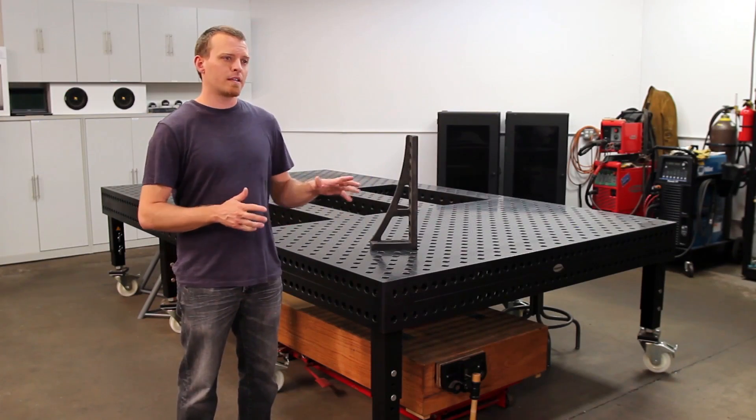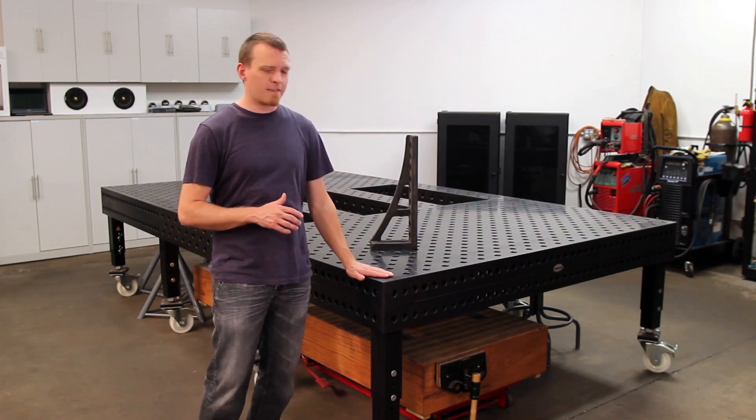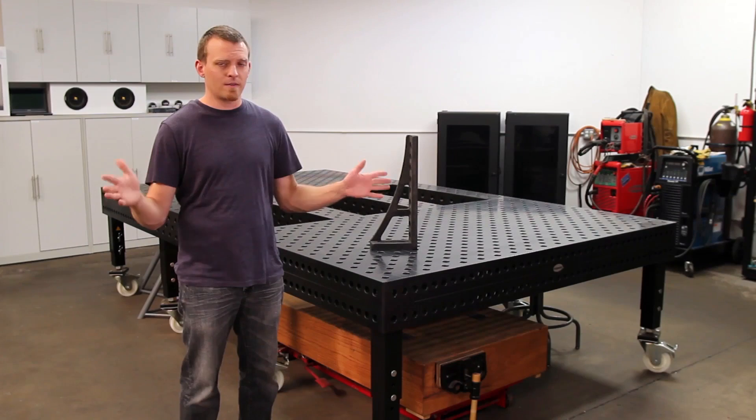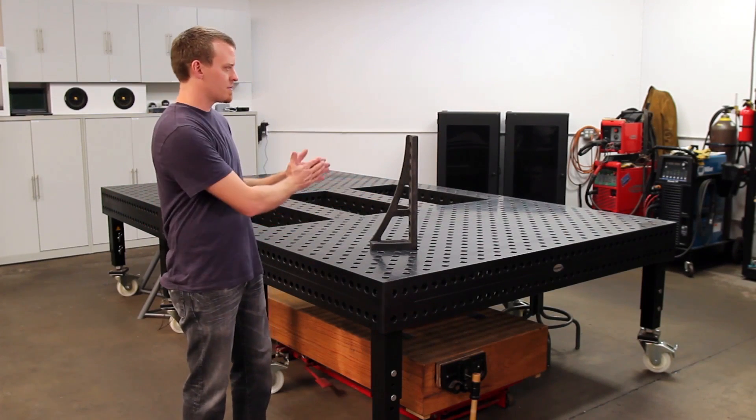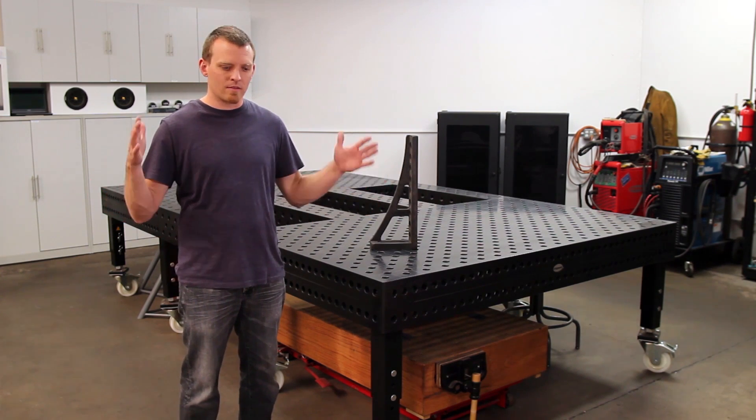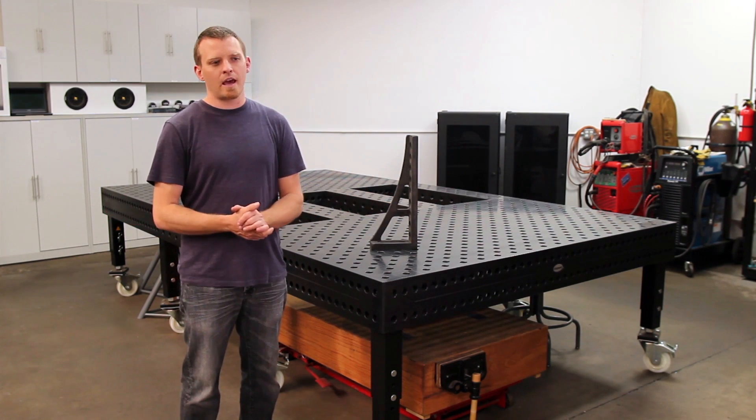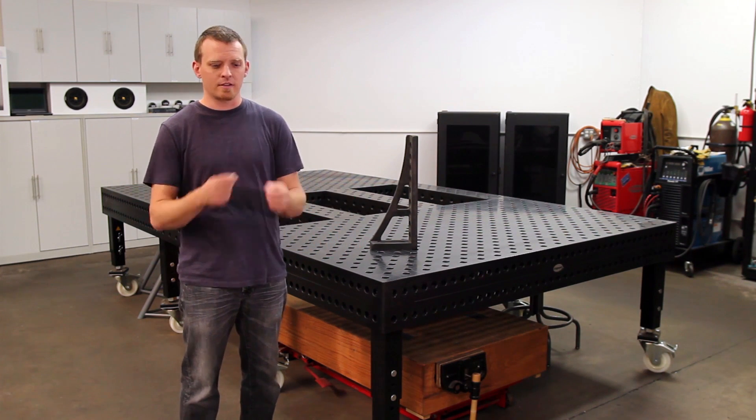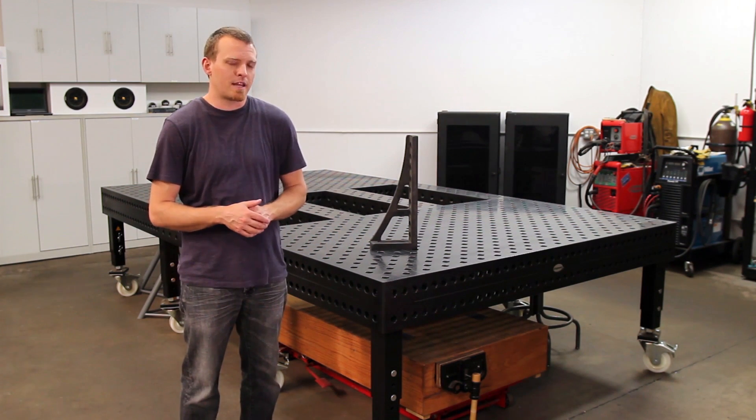So what I did is leverage this table's grid system and built on that, and that allowed me to fixture the entire chassis from just the individual tubes, set it up so it was a complete chassis in one shot, tack weld the whole thing in the jig and actually weld out most of it still in the jig, pop it out to get to some parts that you didn't have access to.